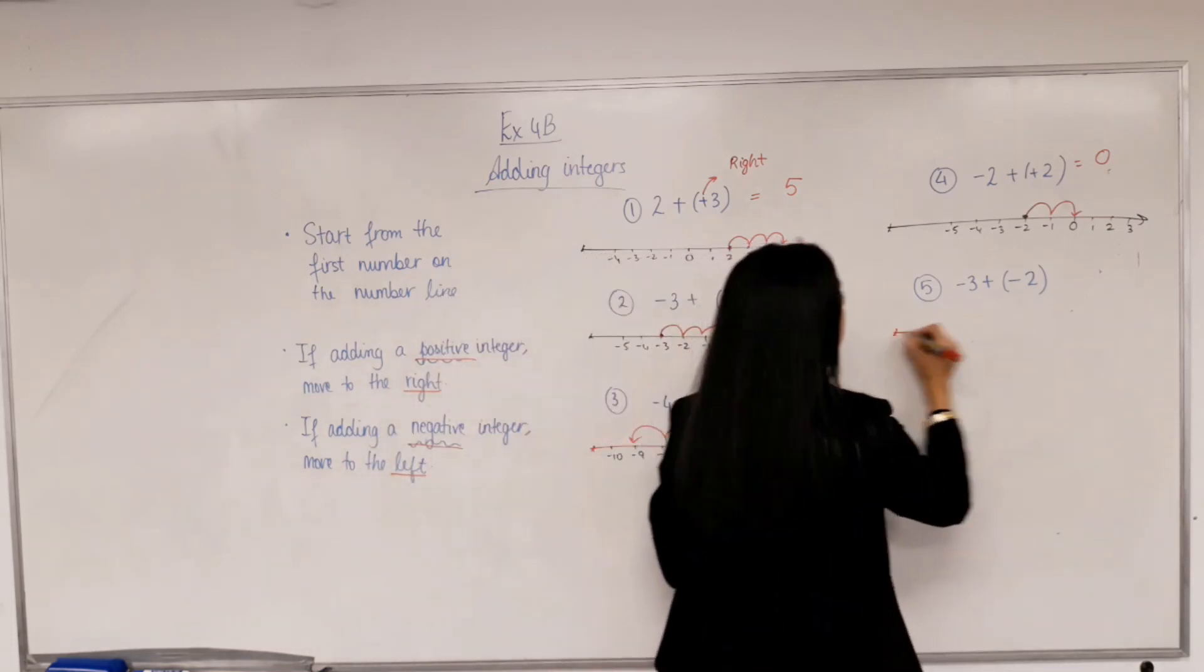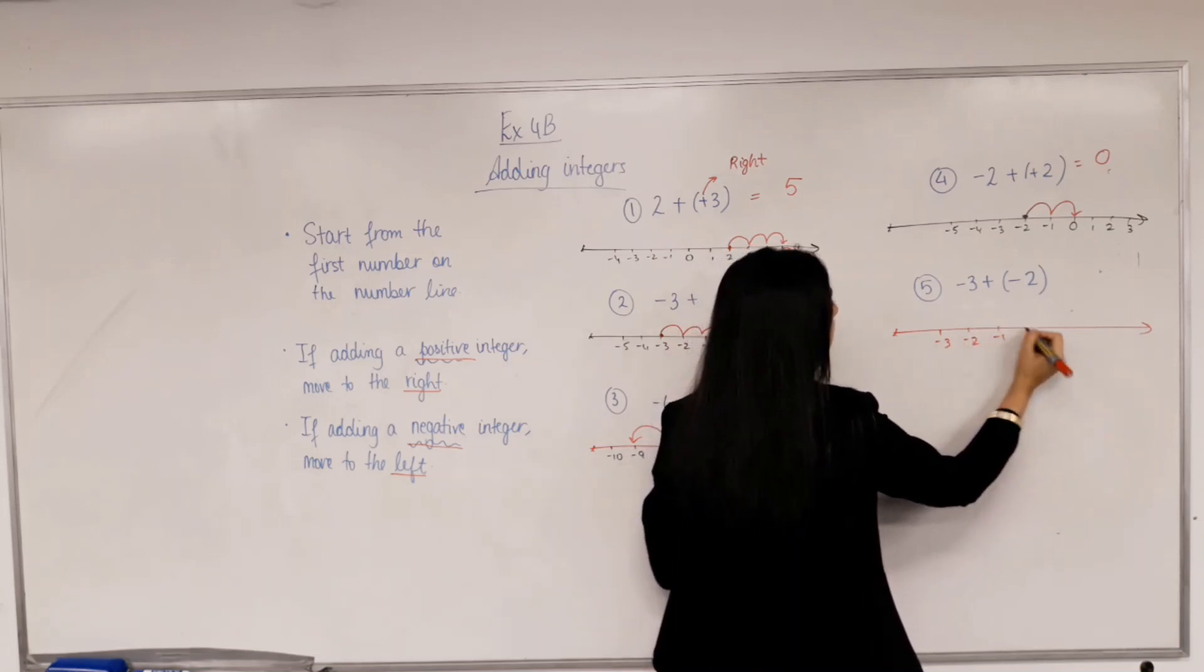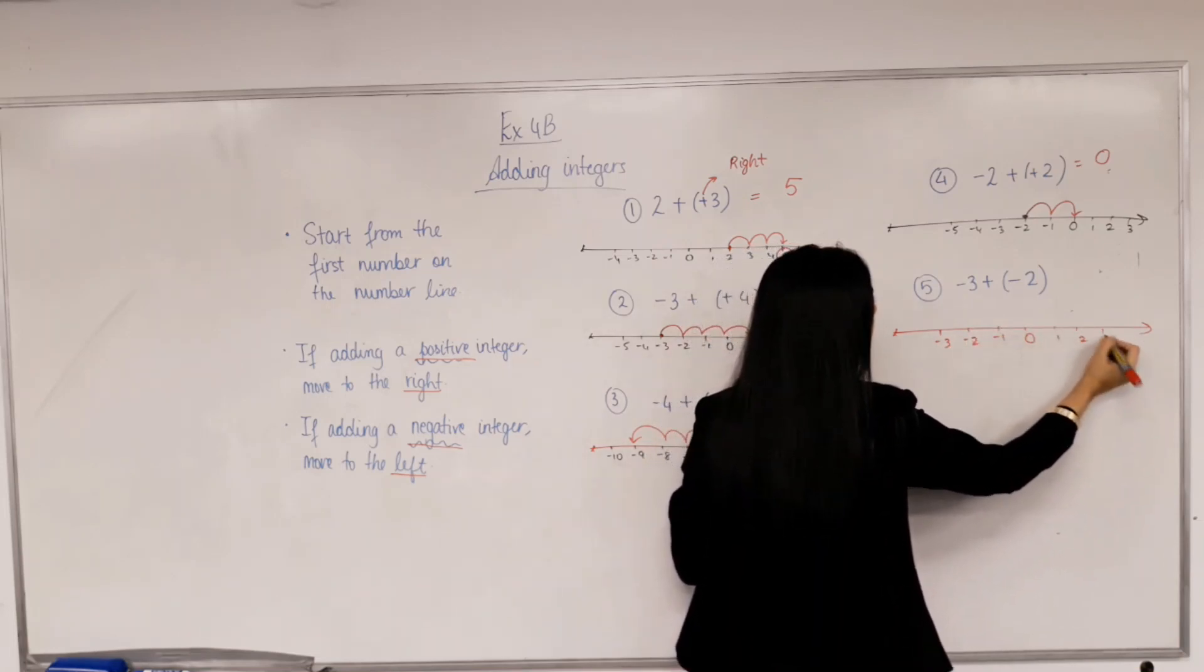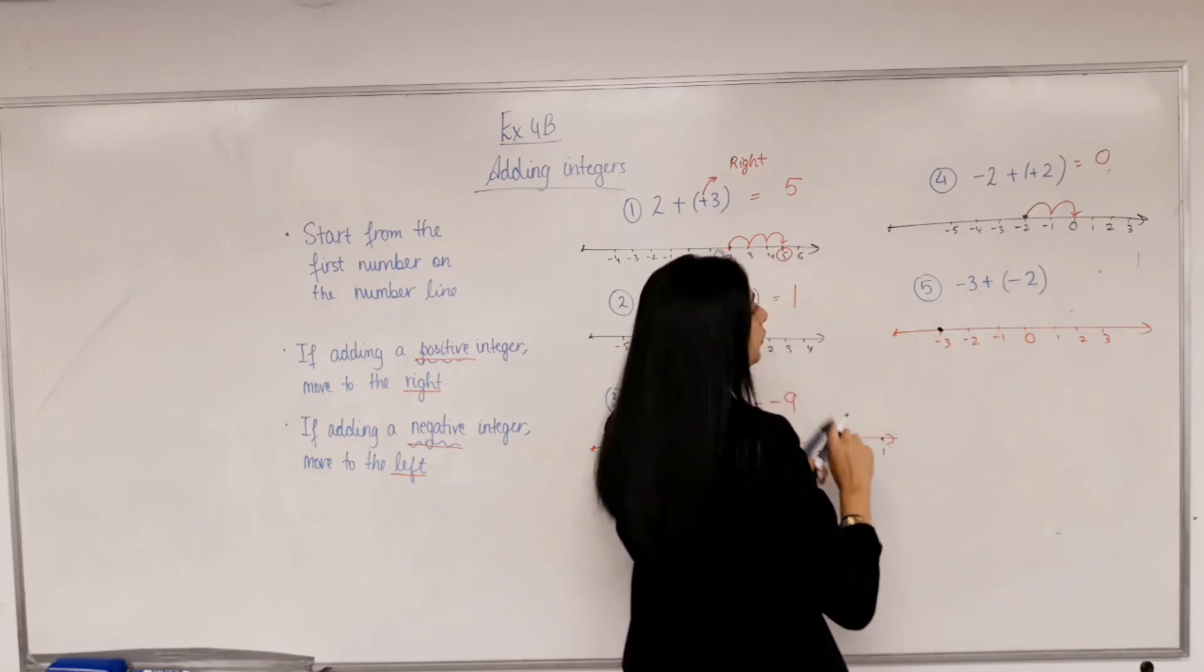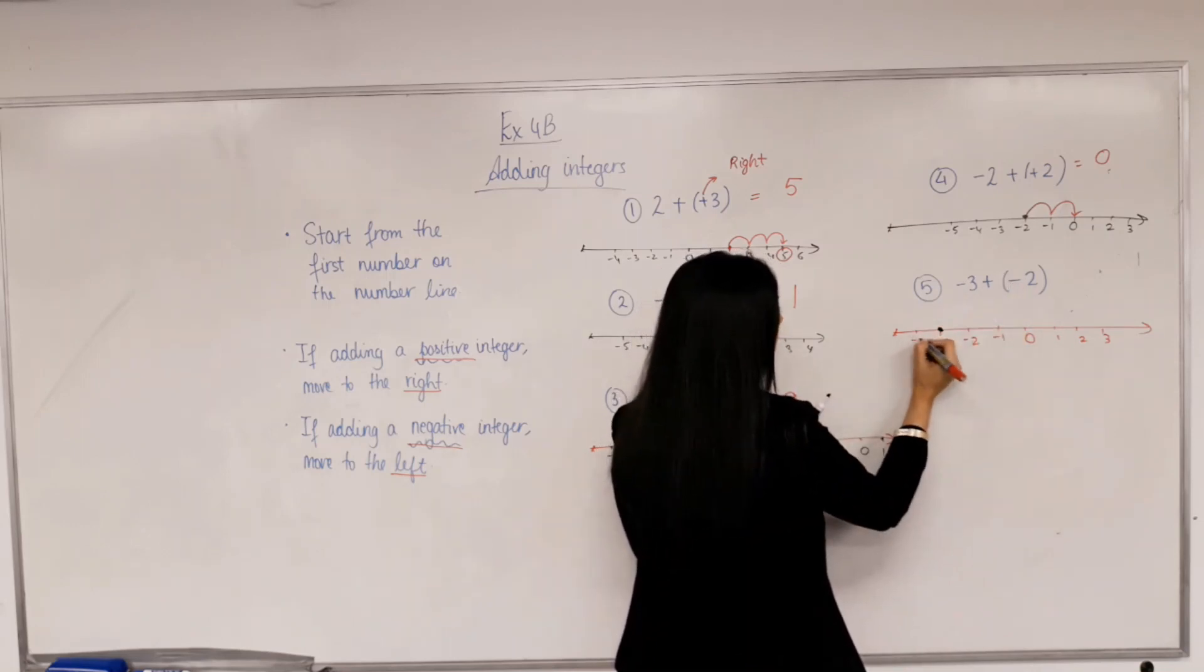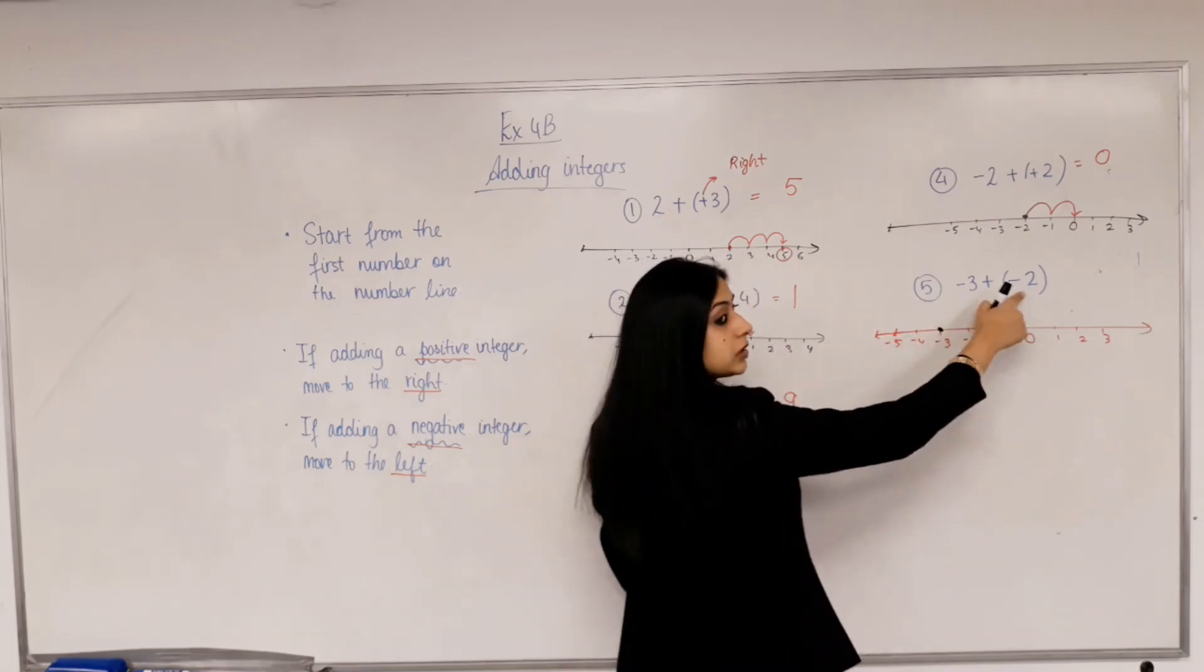Starting at? Negative 3. I'm adding a negative integer. So I'm moving to the? Left. So I need more negative numbers here. Left, how many units? 2. 1,